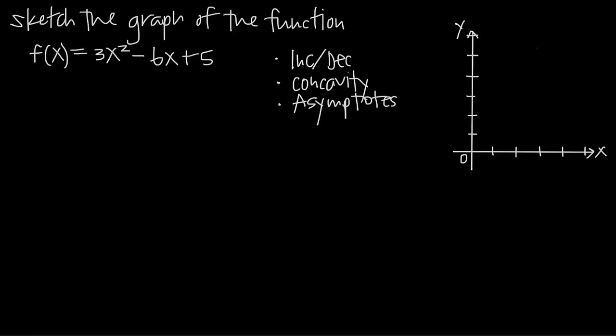In this video, we're going to be talking about optimization and how to sketch the graph of a function. When we're sketching the graph, we're going to be looking at three things primarily: where the function is increasing and decreasing, where the function is concave up and concave down, and the asymptotes of the function. If we can get a good picture of these three things, we should be able to get a good idea of what the graph looks like.